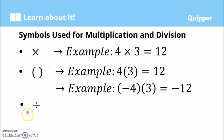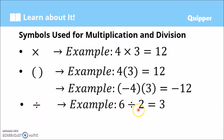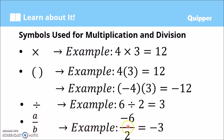Next, we have the division symbol ÷. For example, 6 divided by 2 equals 3 — positive divided by positive. We know this from elementary. Another symbol for division is the fraction form. A divided by B means the first number, the dividend, is on top and the divisor is below. So A over B means A divided by B. For example, negative 6 over 2 means negative 6 divided by 2. Negative divided by positive — different signs — so the answer is negative. 6 divided by 2 is 3, so the answer is negative 3.